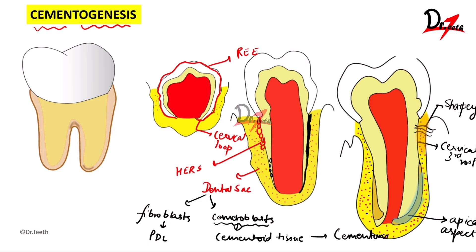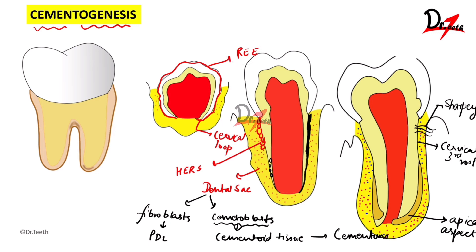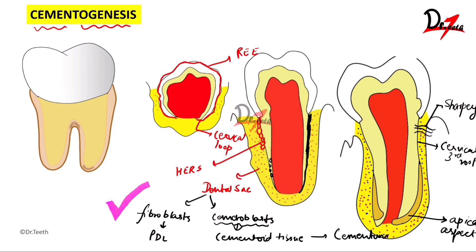To summarize cementogenesis: we discussed the reduced enamel epithelium and the formation of the cervical loop. We spoke about the Hertwig's epithelial root sheath and how the dental sac cells cause its disintegration, forming either fibroblasts or cementoblasts, which ultimately form the cemental tissue.